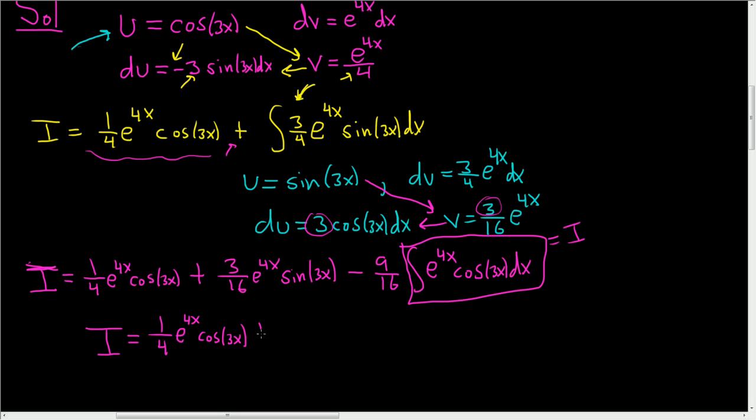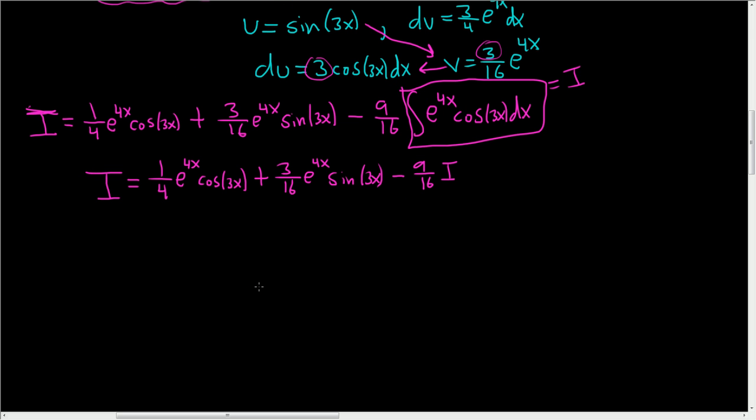Then we have the plus 3 over 16 e to the 4x sine of 3x minus 9 over 16 I. Now what we'll do is we'll add 9 over 16 to both sides. So we're going to add 9 over 16 I, and then here we're going to add 9 over 16 I.